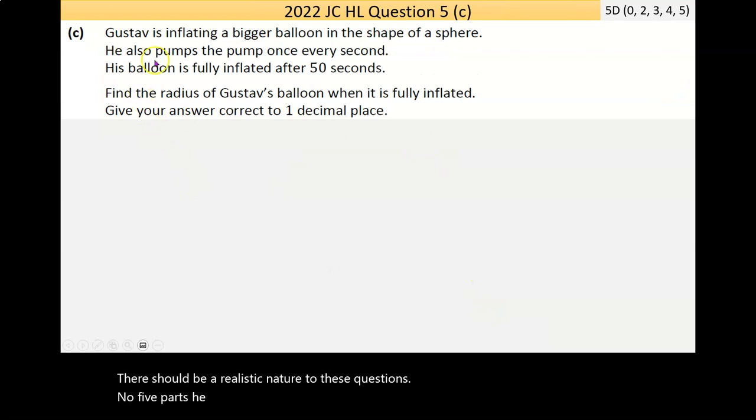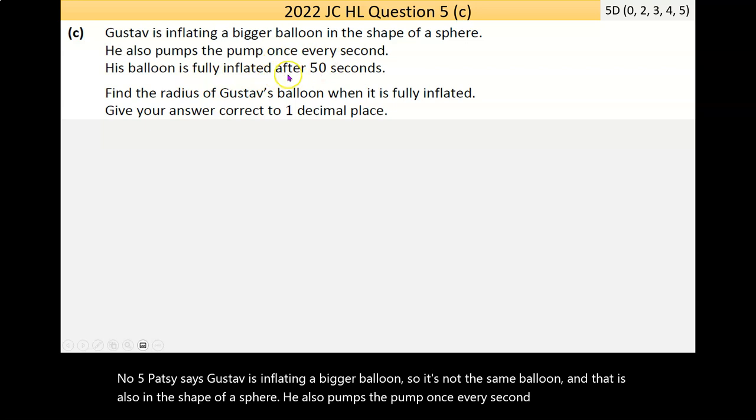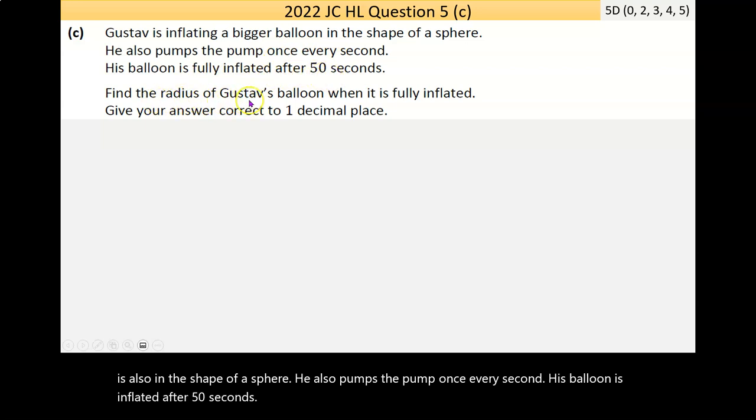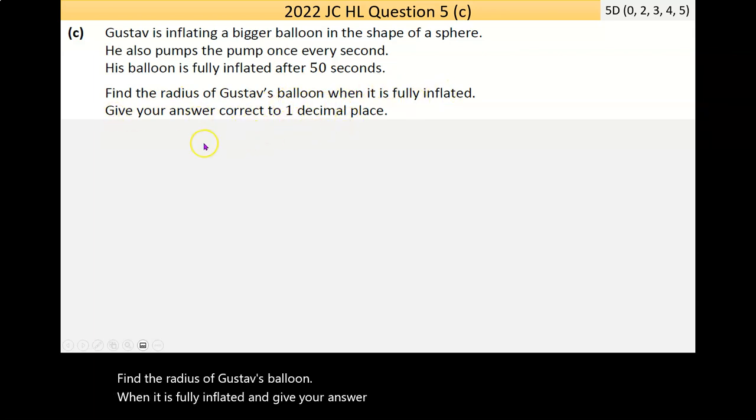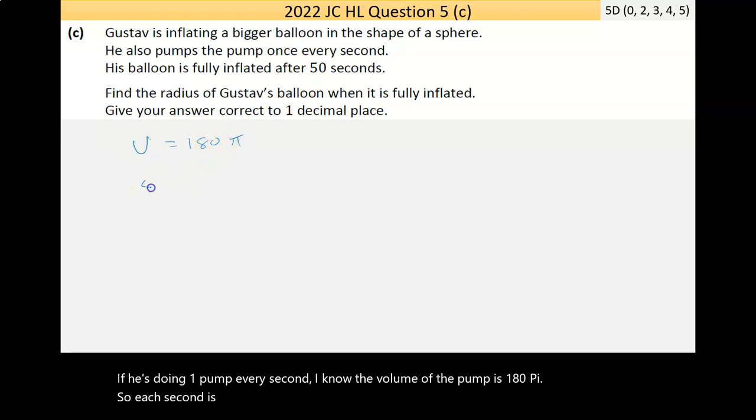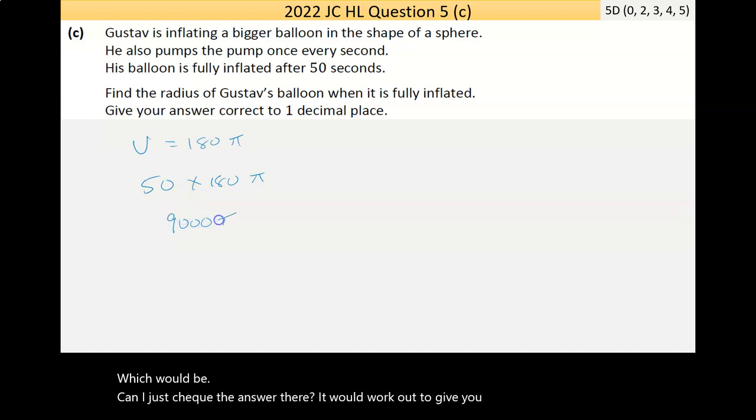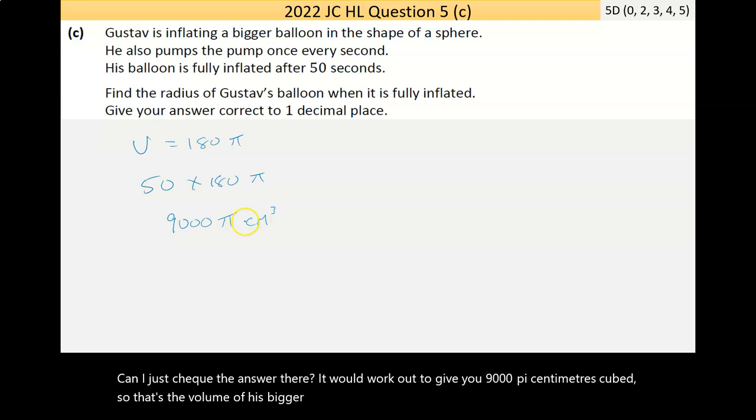Part C says Gustav is inflating a bigger balloon, not the same balloon, also in the shape of a sphere. He also pumps the pump once every second. His balloon is inflated after 50 seconds. Find the radius of Gustav's balloon when it is fully inflated and give your answer correct to one decimal place. If he's doing one pump every second, I know the volume of the pump is 180 pi. So I'm looking for 50 times 180 pi, which would be 9000 pi centimeters cubed. That's the volume of his bigger balloon.